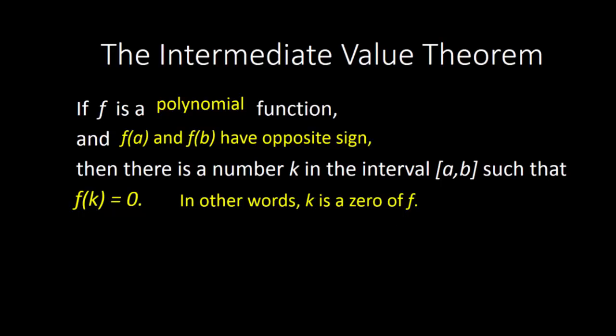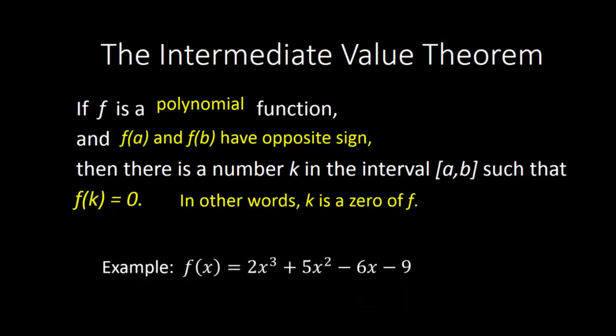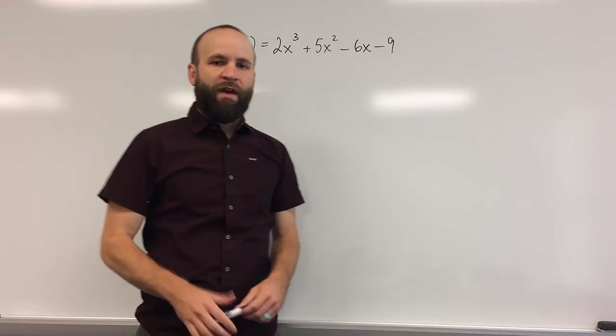So this can help us. While we're working through the process of finding zeros, if we find a positive and a negative value for our function, then we know somewhere in between those x values lies a zero of our function. So let's see how this pertains to our first example — a third degree polynomial function: 2x³ + 5x² − 6x − 9.